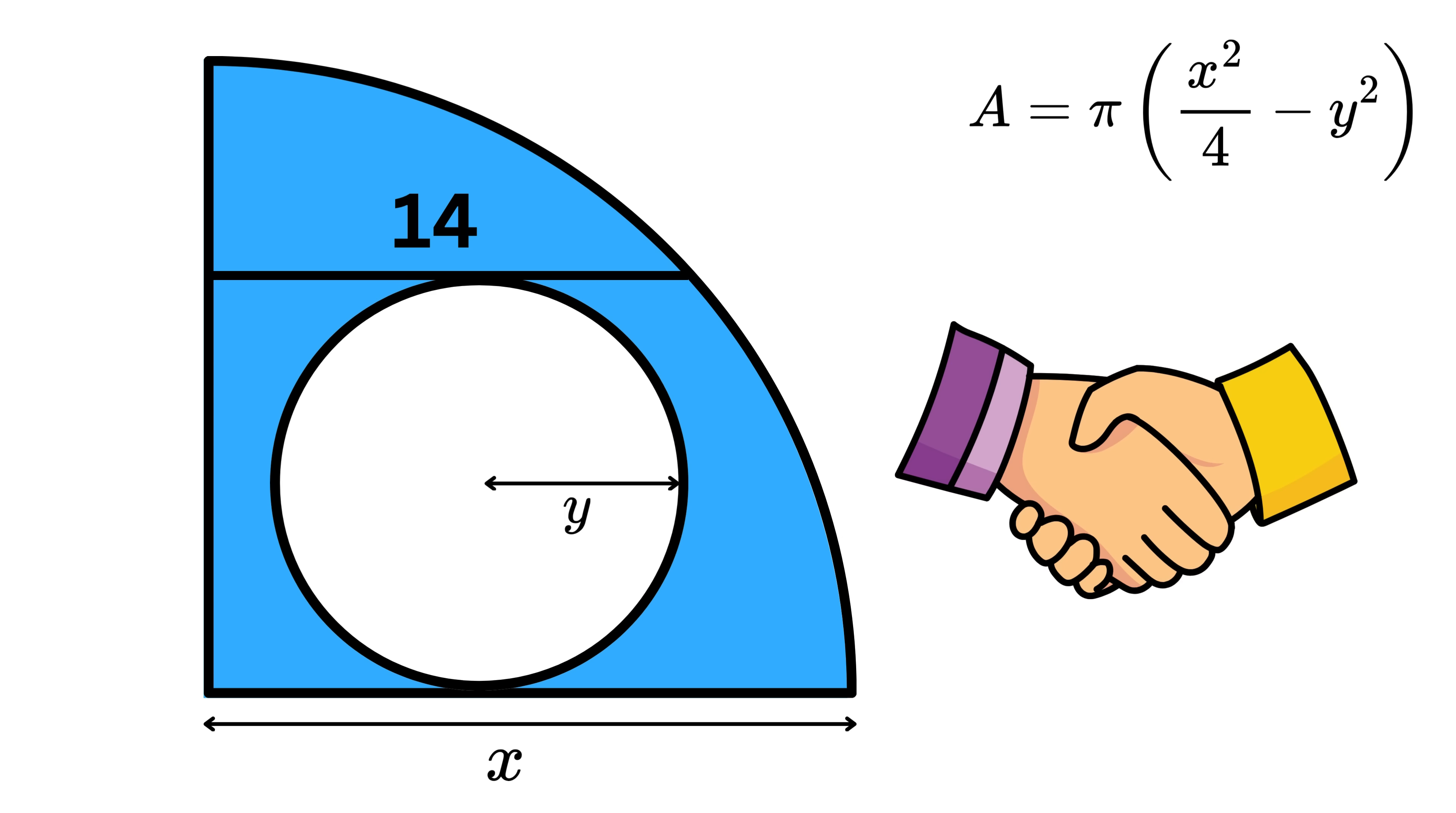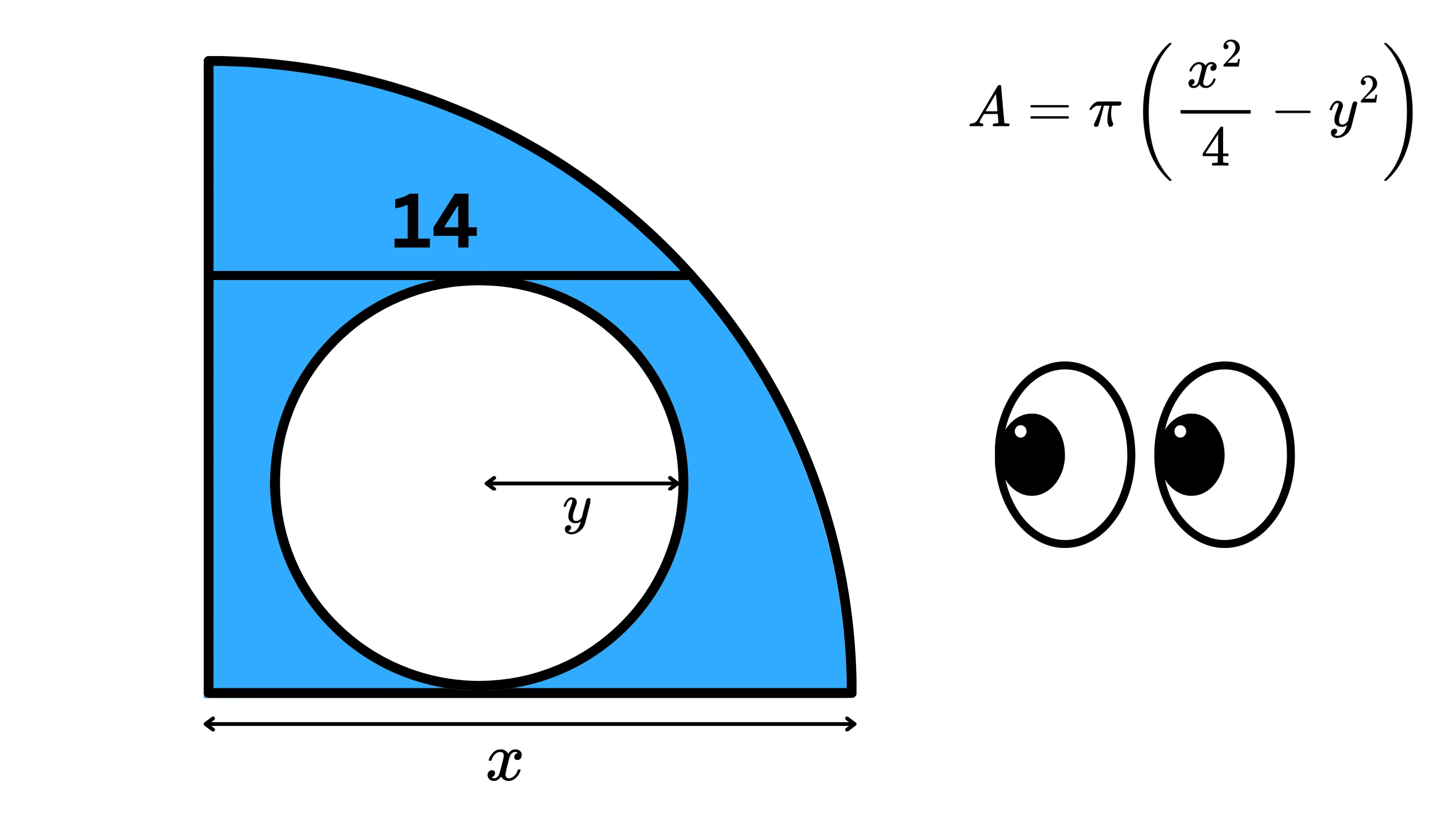Next, let us try to link x and y using the geometry of the figure. Look at this full circle. Draw a vertical diameter that touches the bottom side of the quarter circle.